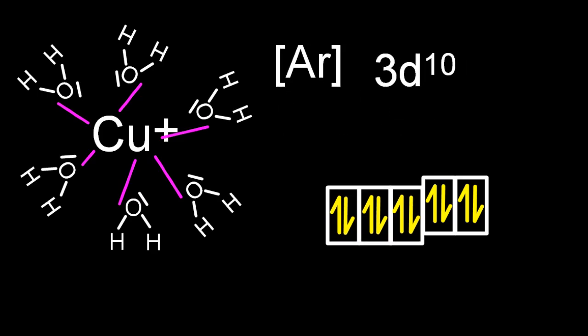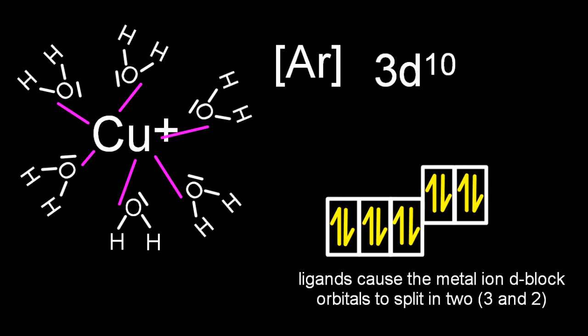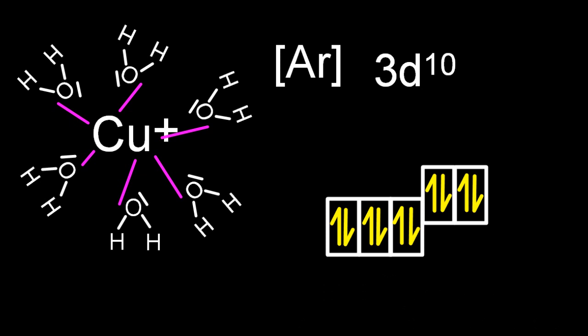Now, those ligands, those water molecules, cause the d-orbital to split. The ligands cause the metal ion d-block orbitals to split.